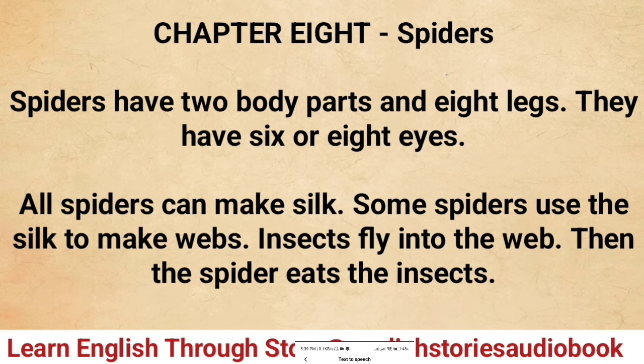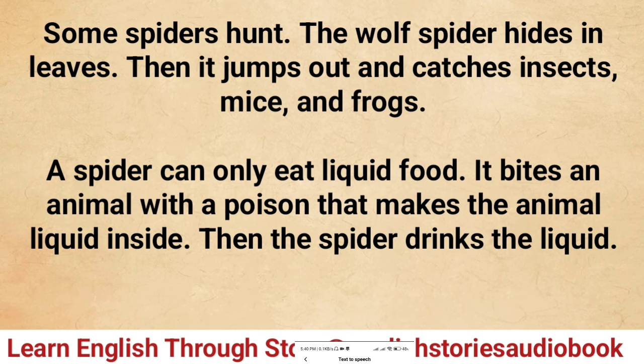Chapter eight: Spiders. Spiders have two body parts and eight legs. They have six or eight eyes. All spiders can make silk — some spiders use the silk to make webs. Insects fly into the web and then the spider eats them.